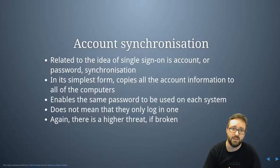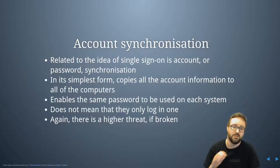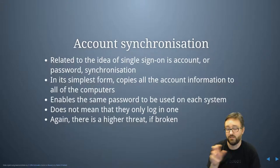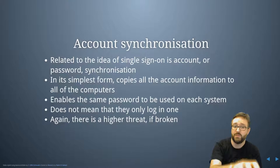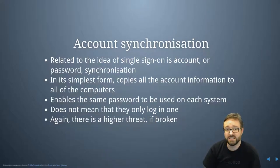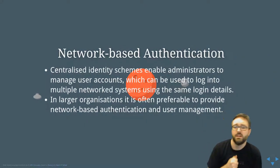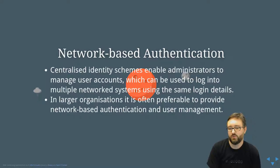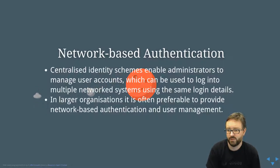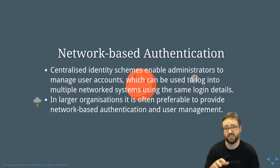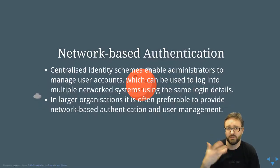In that specific example there's a higher threat because instead of your shadow file — your hashed password — being in one location, you now have it in a bunch of different places. Account synchronization is part of how quite a few centralized solutions work. Centralized identity schemes basically allow administrators to manage user accounts, and then users can log into multiple network systems using the same login details, with the authentication happening over the network.